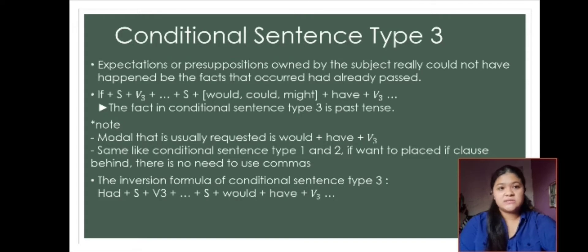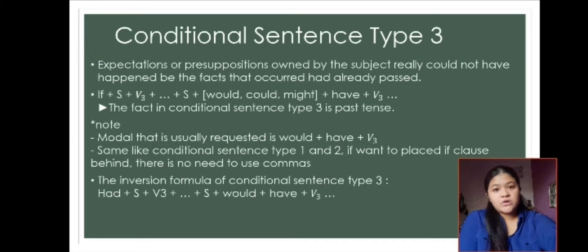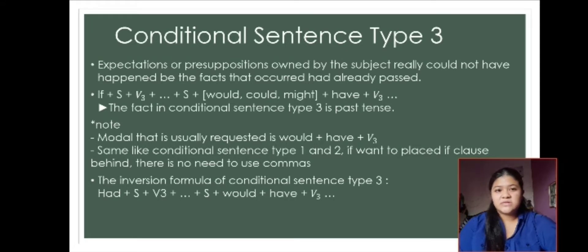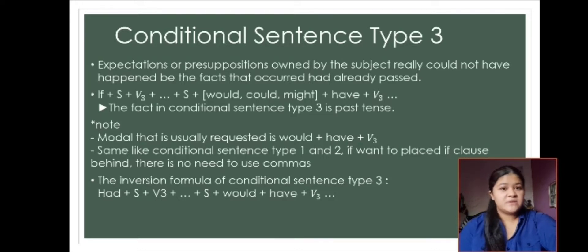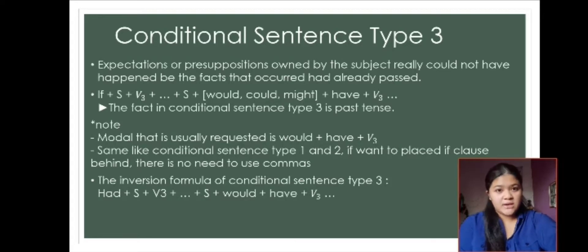Next is conditional sentence type 3. In type 3, the expectation or presupposition of the subject really could not have happened because the fact has already passed. In other words, in conditional sentence type 3, all that the subject has or did never happened or couldn't happen. The formula is: if + subject + verb 3 + complement + subject + would/could/might + have + verb 3.